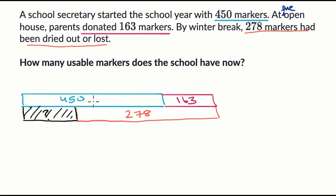So first we could add 450 to 163 to get this total. And then we could subtract 278. So we're going to do 450 plus 163. And then we're going to subtract 278. So first 450 plus 163, I can expand those out. I have 400 plus five 10s, that's 50, plus zero ones. And then I'm adding 163, that's 100, six 10s and three ones.